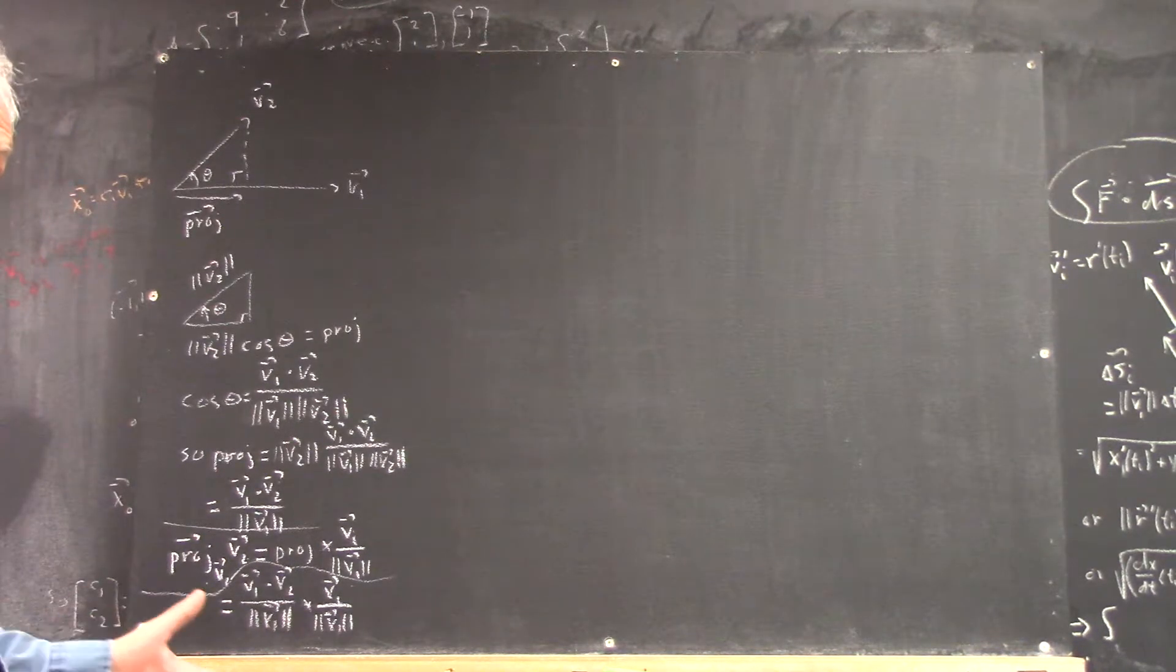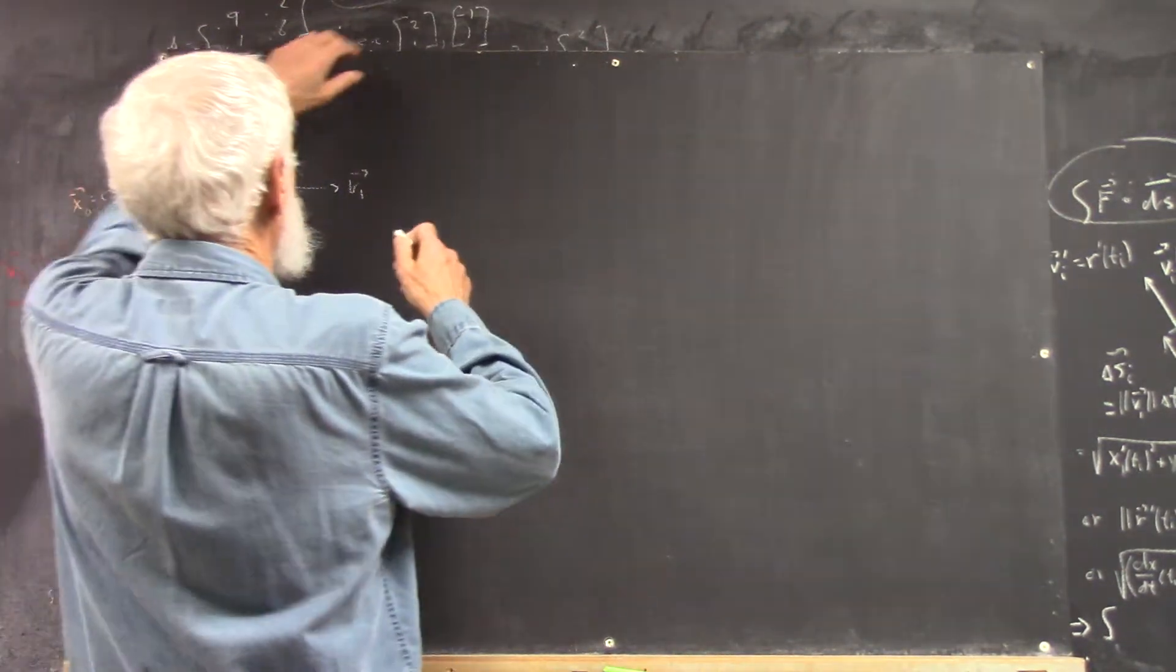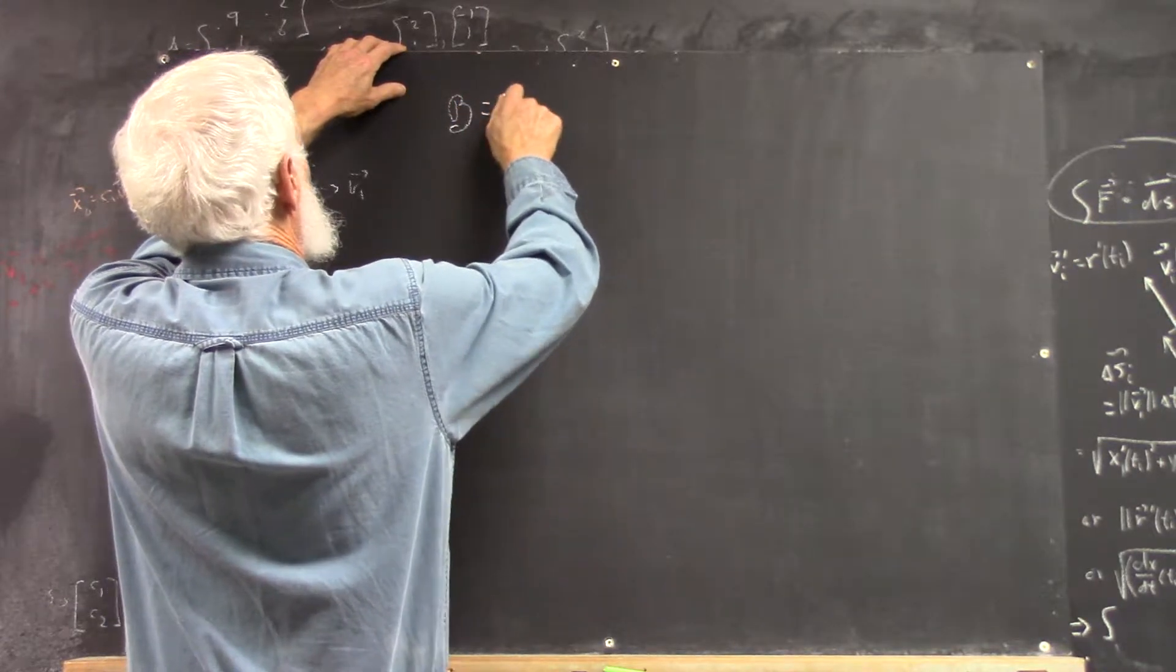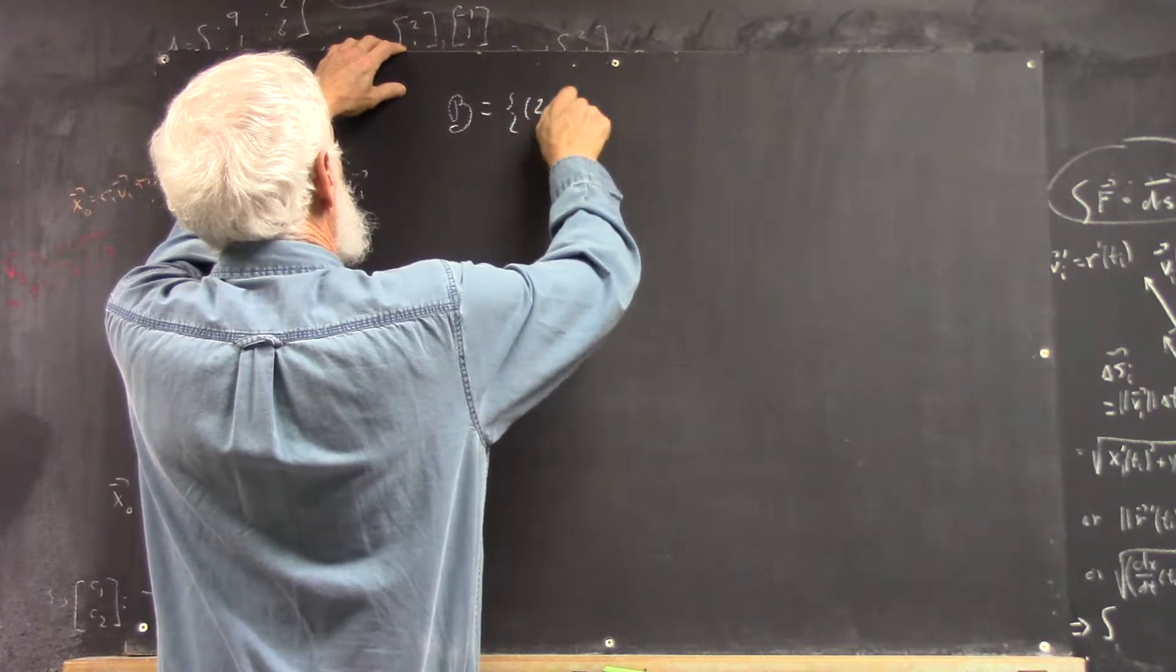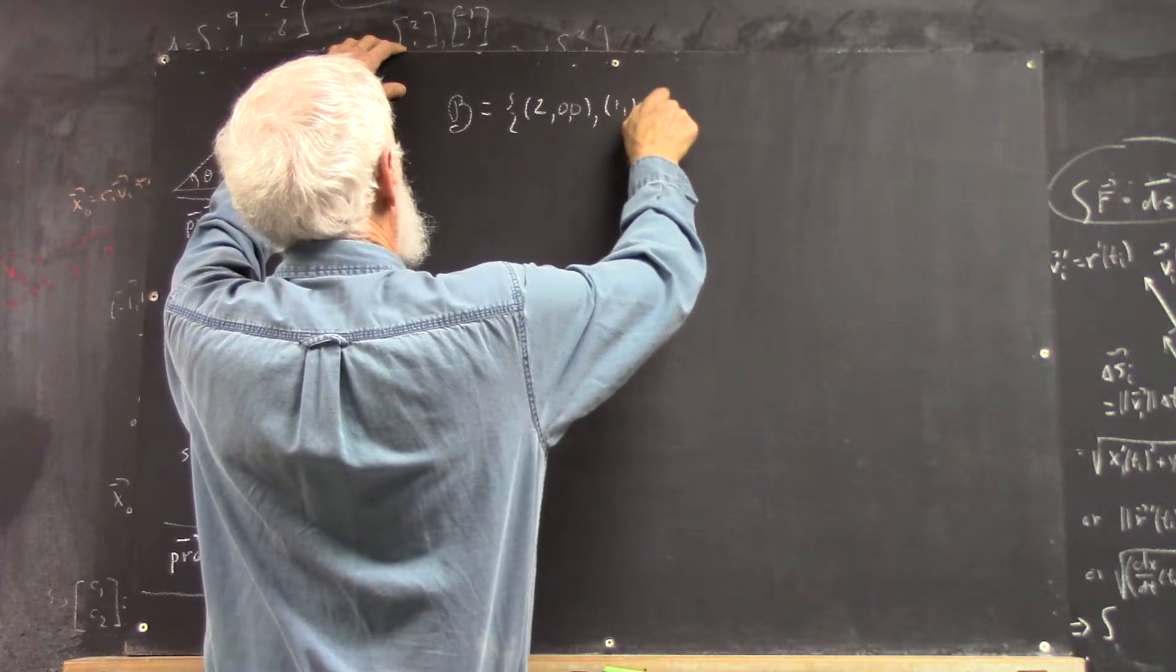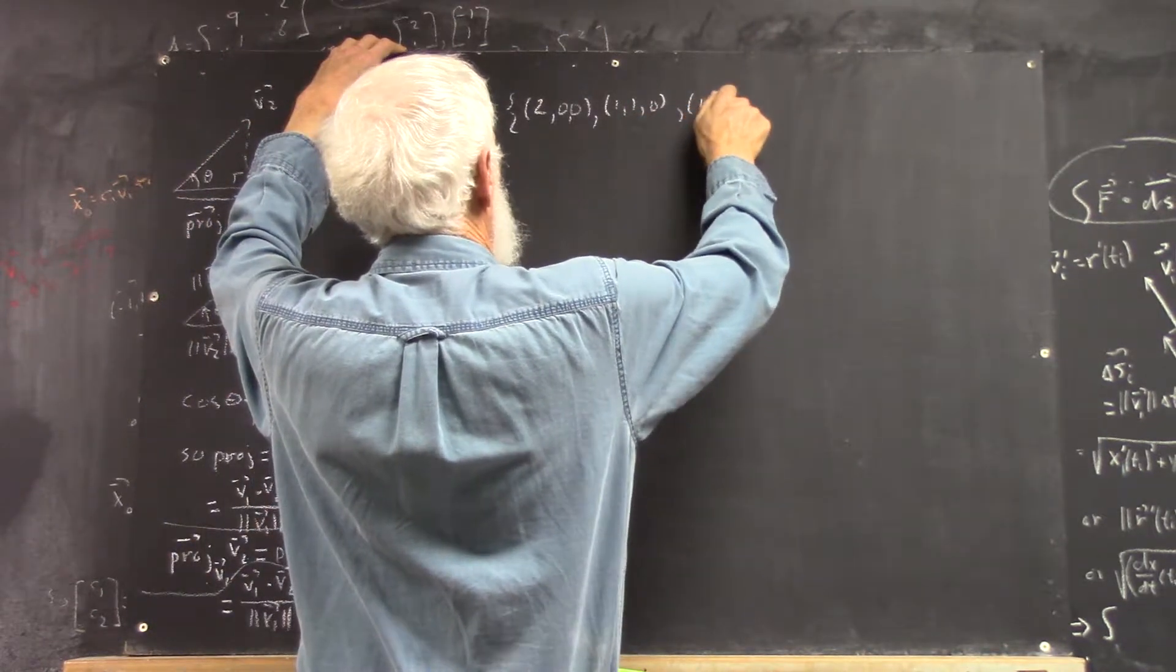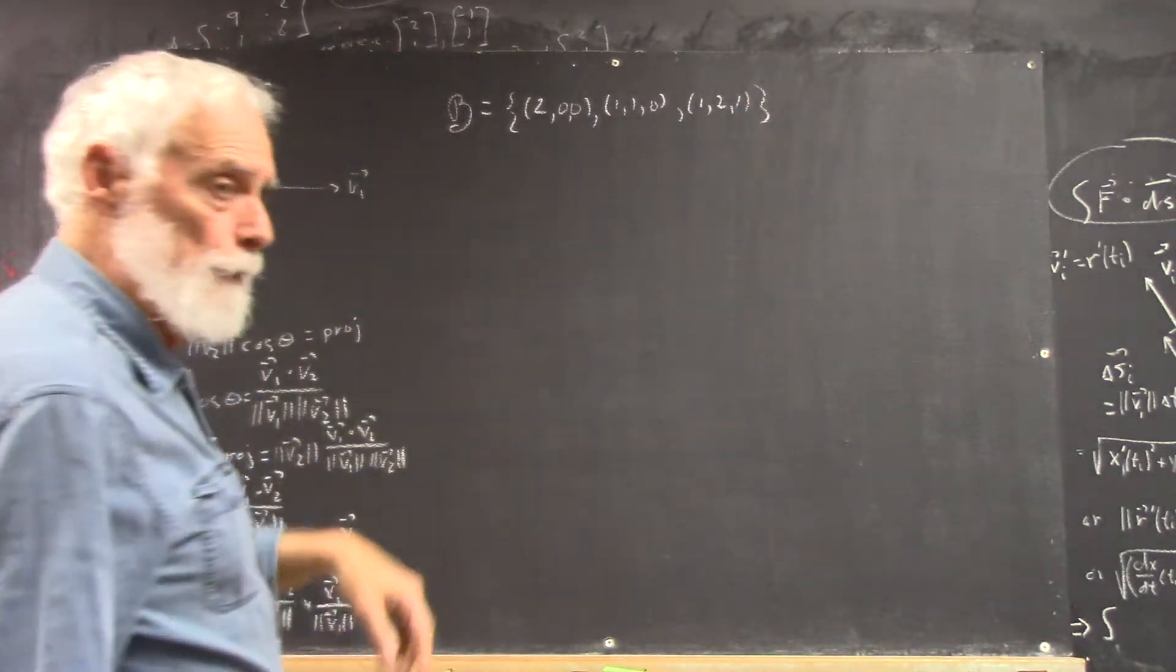So, let's calculate it. Remember we have your basis, two, zero, zero, one, one, zero, one, two, one, if I remember correctly, and if not, we'll use this anyway. So, you start with the first, start with V1, and actually we'll start with V2.